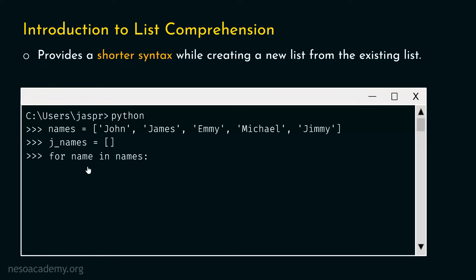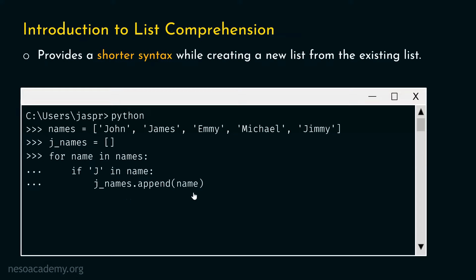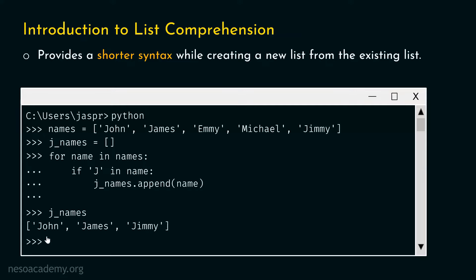Now we want to check a condition: if the name contains the letter capital J, then only we proceed and add that name inside j_names. We type: if 'J' in name. If capital J exists within the name, we continue and type: j_names.append(name). This appends names containing capital J to j_names. After hitting enter to exit the loop, we type j_names and get John, James, and Jimmy — exactly what we wanted.